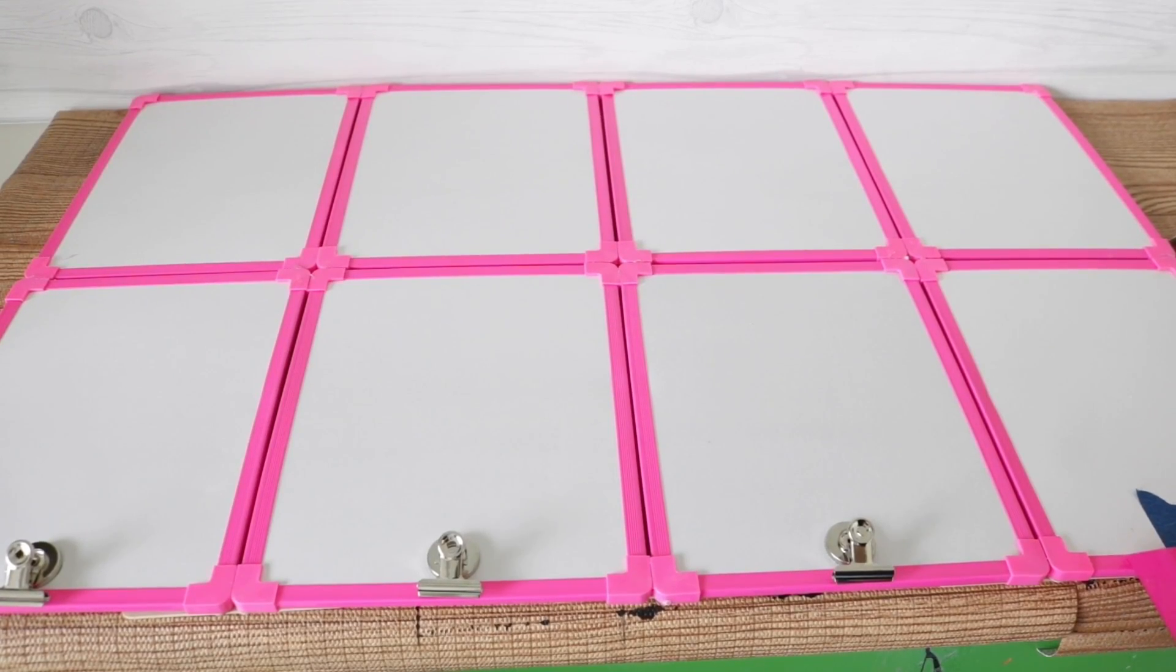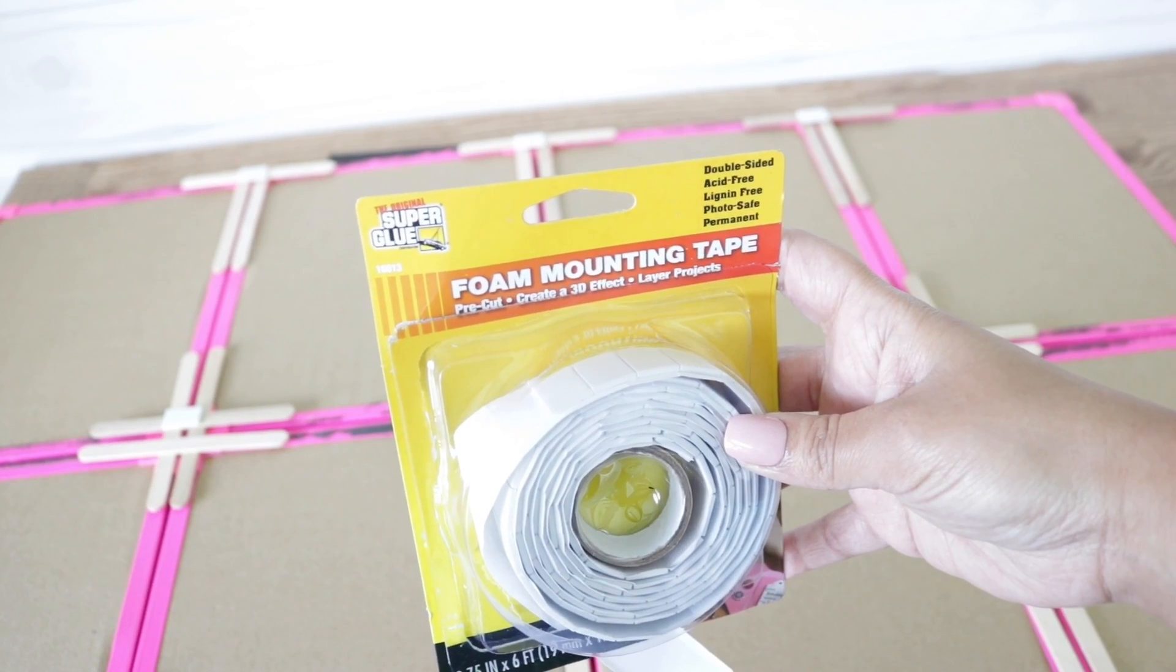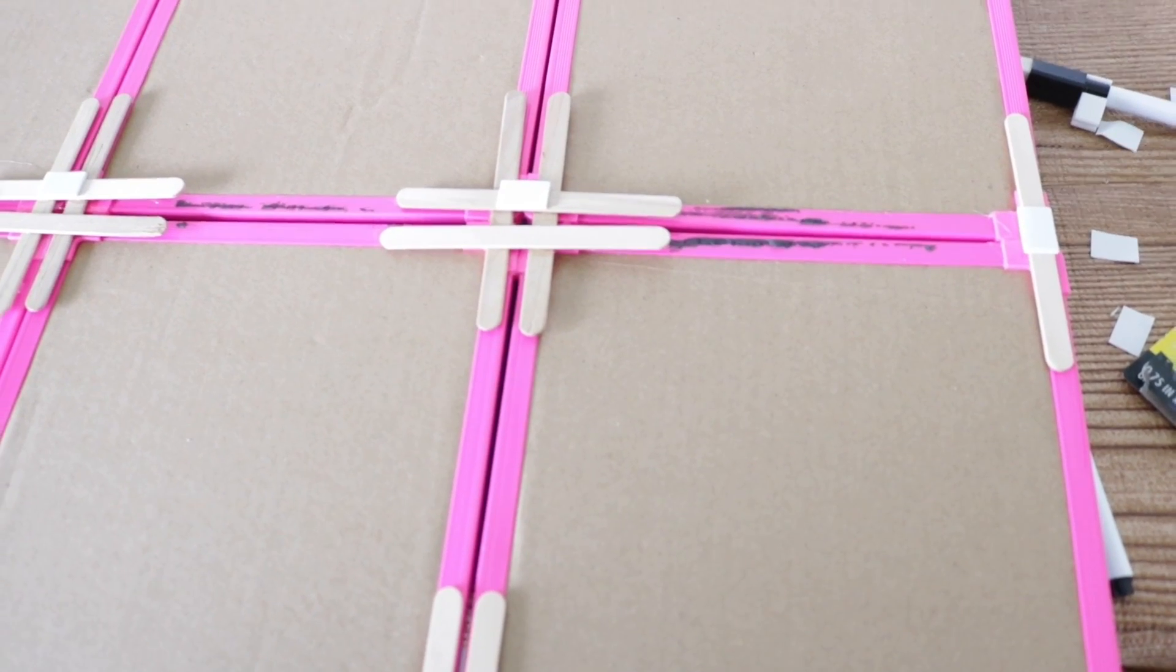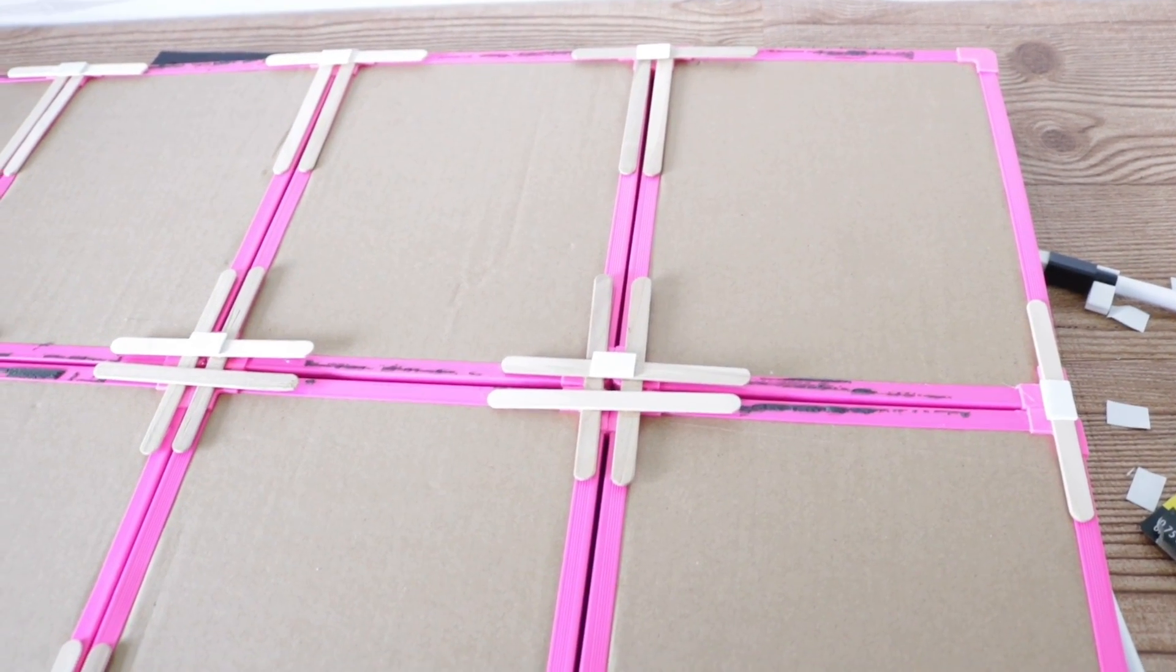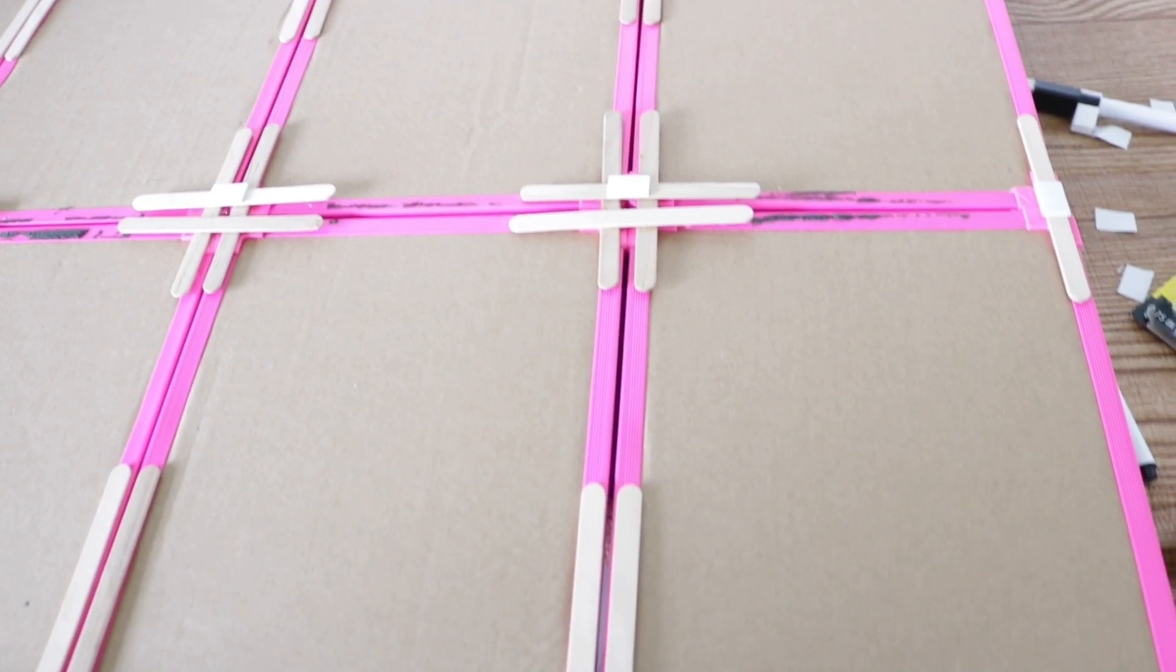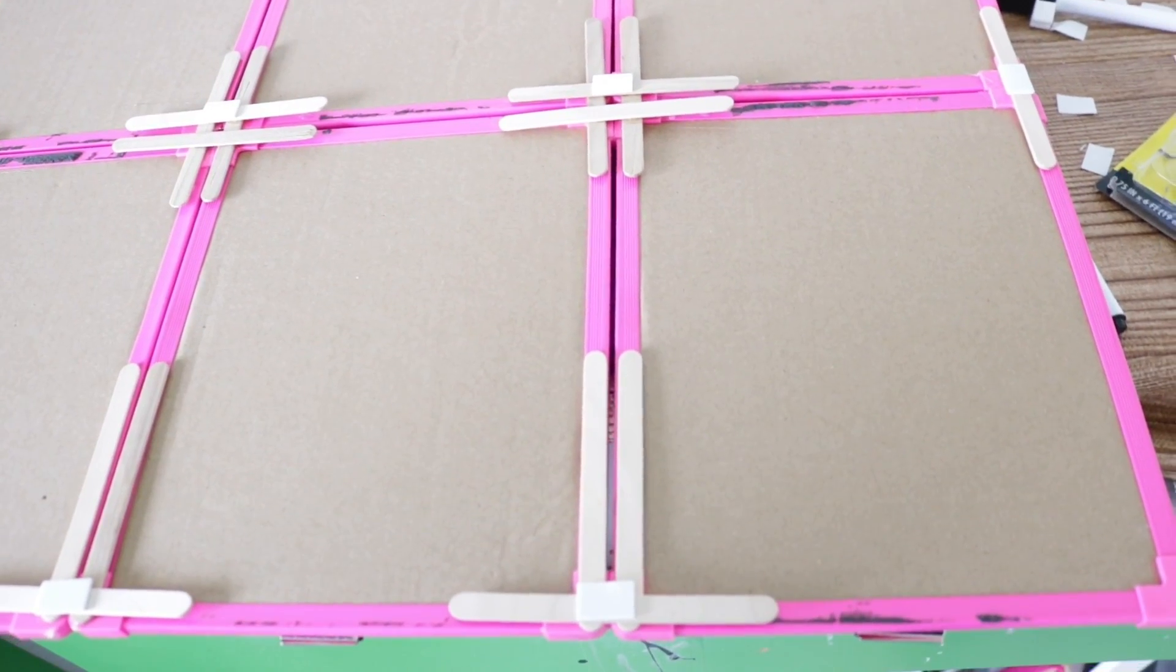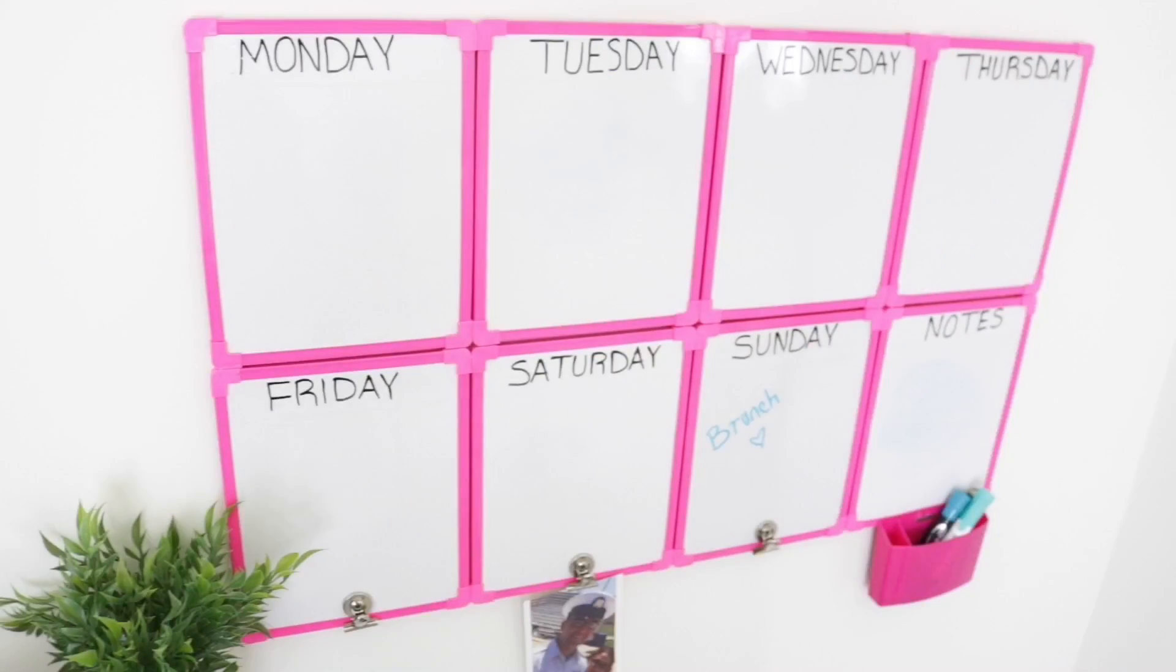I only ended up using three of them since my fourth frame had the holder. Then I used some Dollar Tree mounting tape on the popsicle sticks to mount it on the wall. You can also use command hooks or even nails. How you hang it is totally up to you, but this is where I placed my mounting tape.